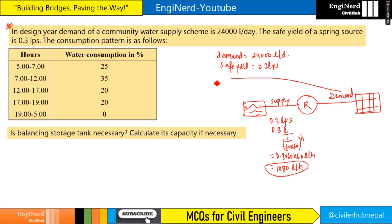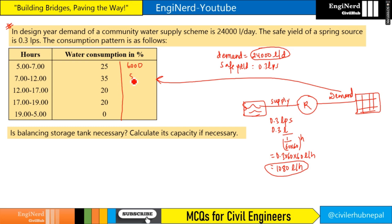Now for the demand part: 25% of 24,000 liters per day is 0.25 × 24,000 = 6,000 liters. For 35%, it will be 8,400 liters. For 20%, it will be 4,800 liters. The next period is also 4,800 liters, and the last period is 0.